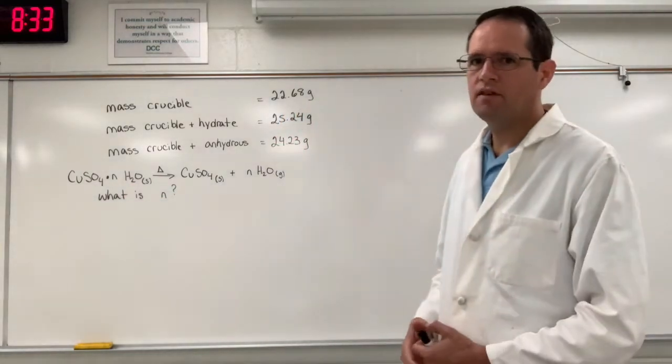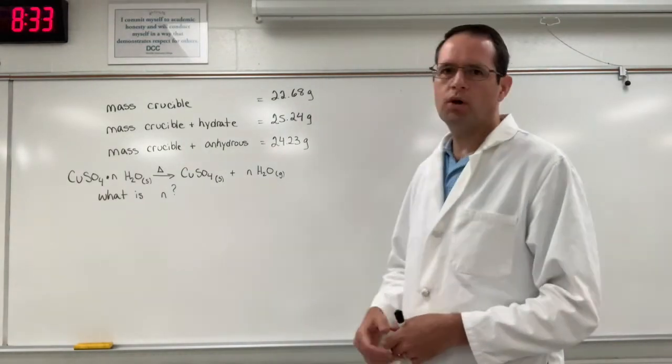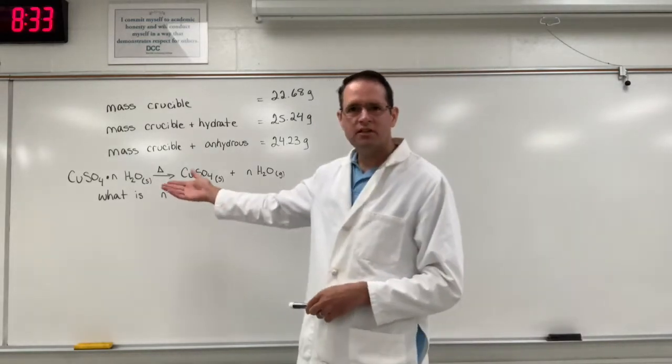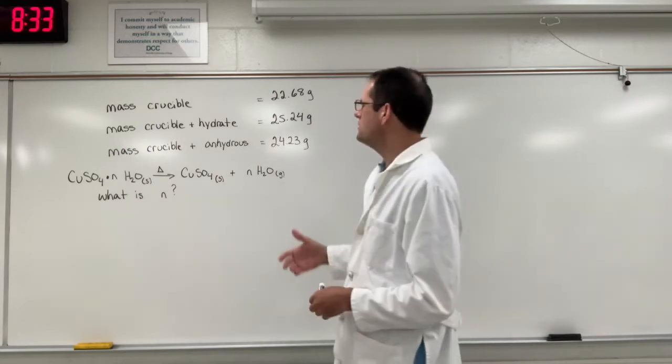If n is three we would call the substance copper sulfate trihydrate. Or if n is four we would call it copper sulfate tetrahydrate. The way we determine it is by mass differences and then calculating moles and going from there. I'll show you all of this.